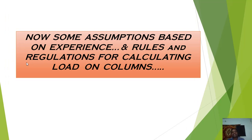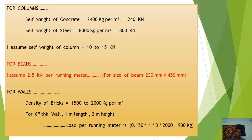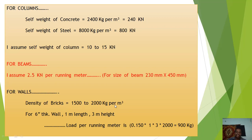For design assumptions: self weight of concrete is 2400 kg/m³ (equivalent to 24 kN/m³), self weight of steel is 8000 kg/m³ (equivalent to 80 kN/m³). Self weight of column is assumed to be 10 to 15 kN. For beams, self weight is assumed as 2.5 kN per running meter for a beam size of 230 mm × 450 mm.